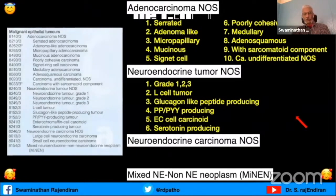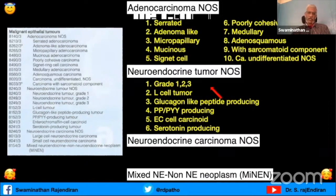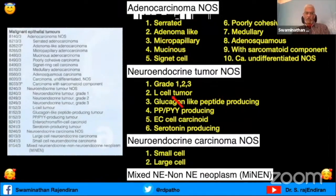In the neuroendocrine tumors there are three grades: grade 1, 2, and 3, depending upon what the tumor is producing. We usually grade all neuroendocrine tumors in tubular organs as grade 1, 2, or 3. In neuroendocrine carcinomas it can be small cell or large cell carcinoma. When you see adenocarcinoma and neuroendocrine tumors together, we call it mixed neuroendocrine non-neuroendocrine neoplasm.